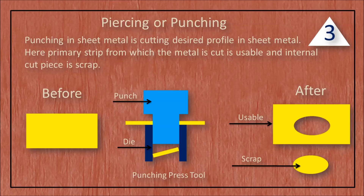Punching in sheet metal is cutting a desired profile in sheet metal. Here the primary strip from which the metal is cut is usable, and the internal cut piece is scrap.